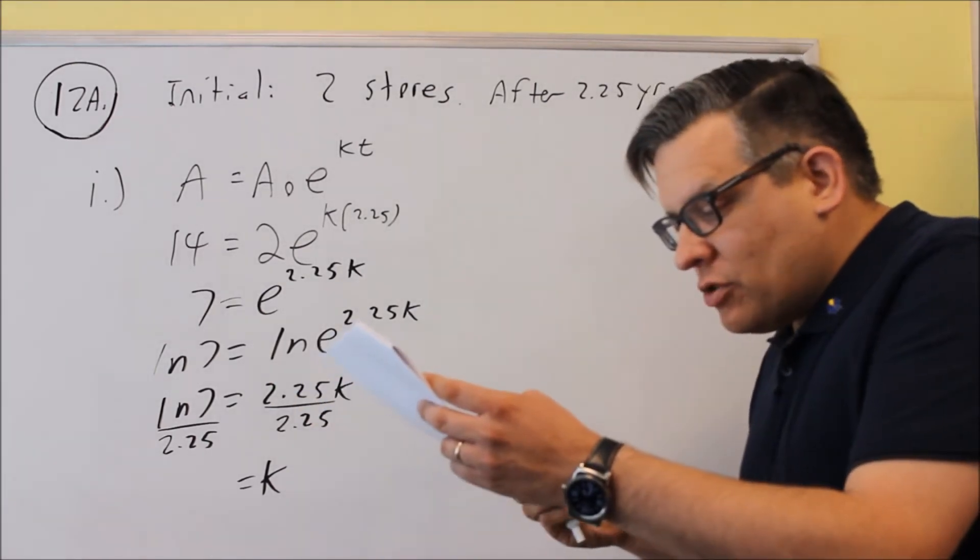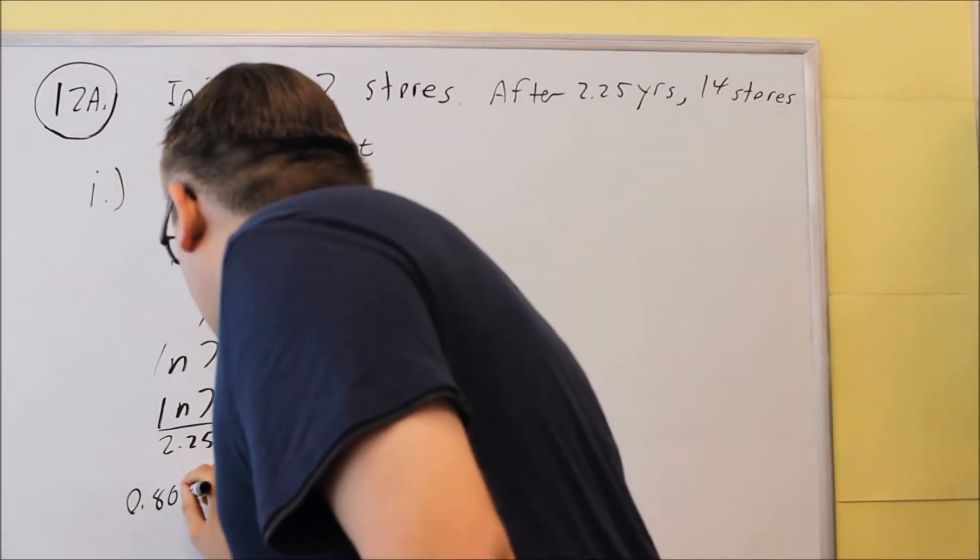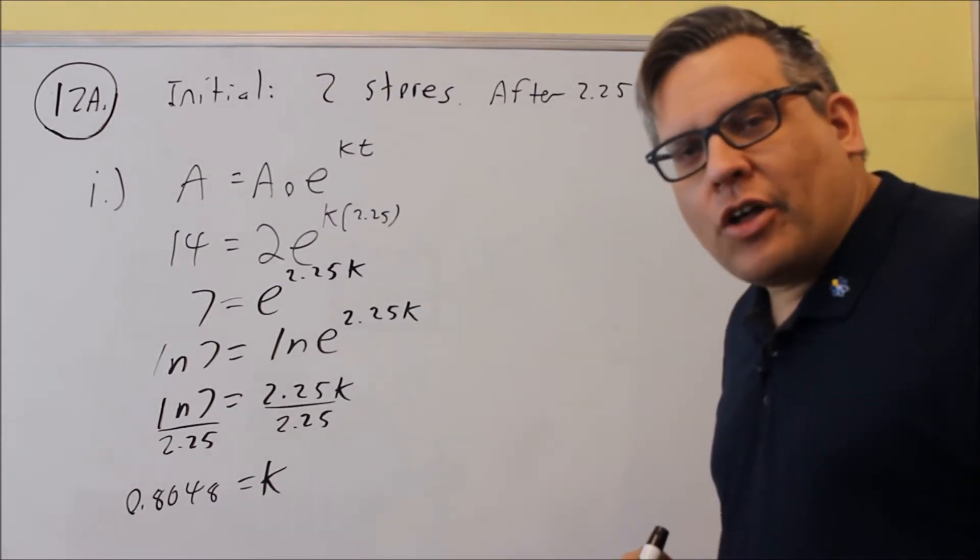So natural log of 7 over 2.25, we put that in the calculator, and we're going to get 0.8648 rounded to four places. And that's going to be our k value.